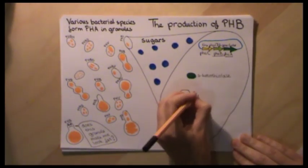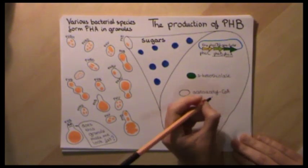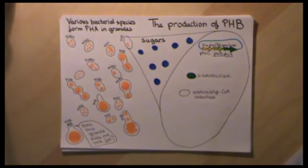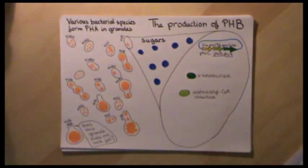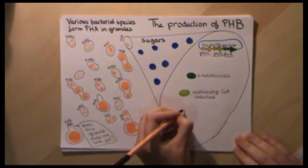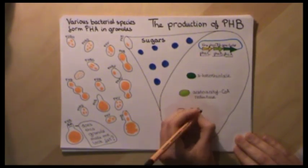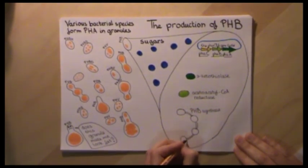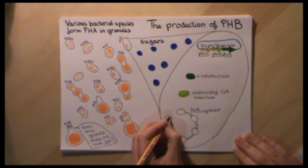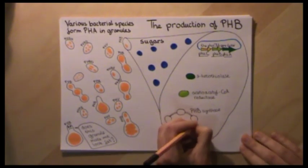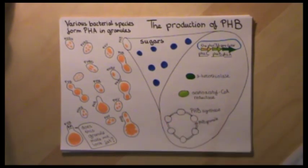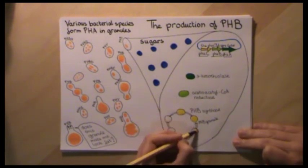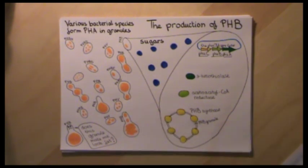Gene A encodes for the enzyme 3-ketothiolase. Gene B encodes for the enzyme acetoacetyl coenzyme A reductase. And gene C encodes for the enzyme PHB synthase, which is positioned on the granule.